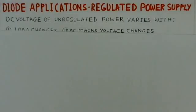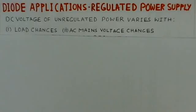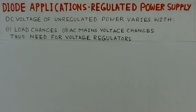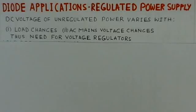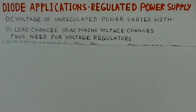We have already seen that the DC voltage of unregulated power supplies varies with changes in the load and also due to AC mains variations. Therefore, there is a need for voltage regulators which can take care of these changes.